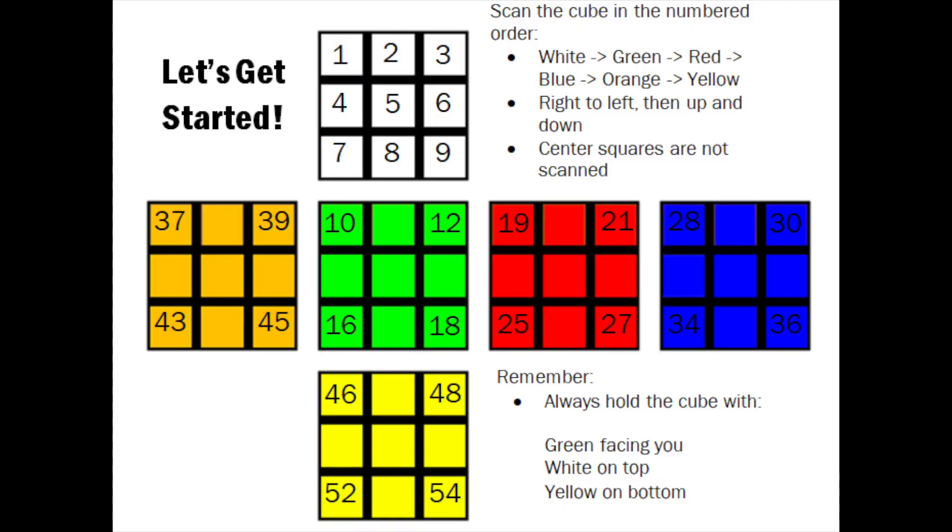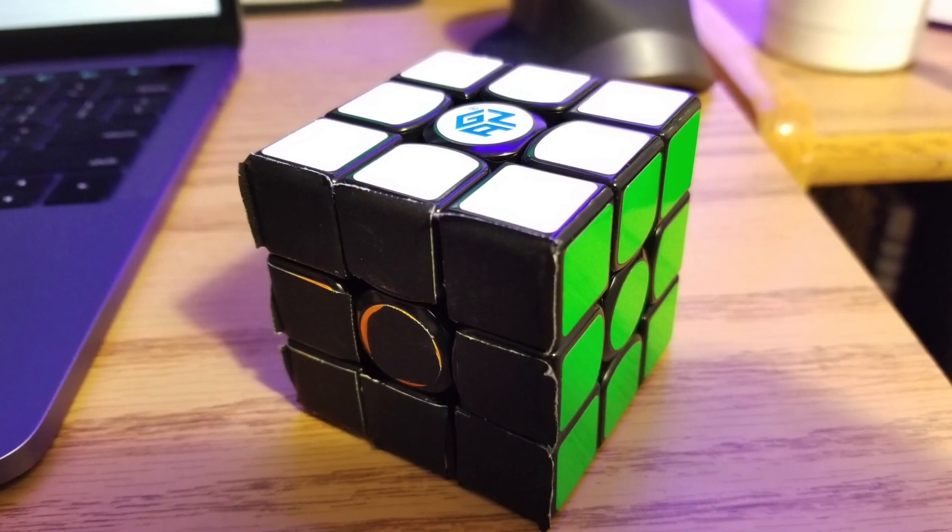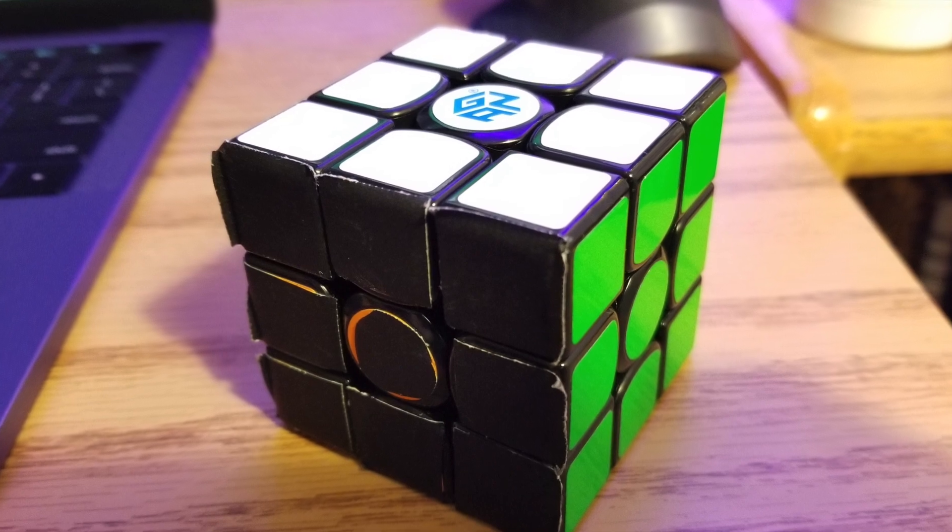Scan the sides of the cube in this order: white, green, red, blue, orange, and then yellow. For best results, please cover the orange side with black tape.